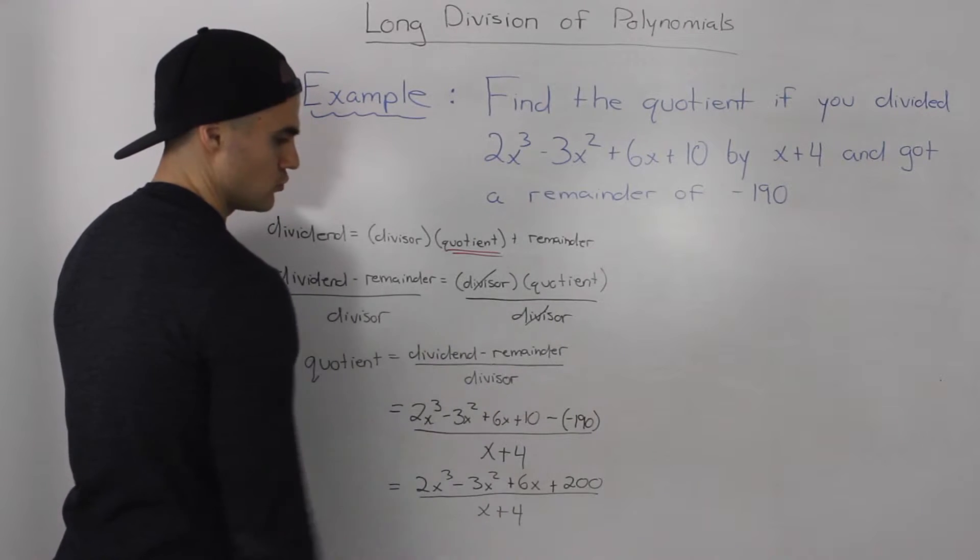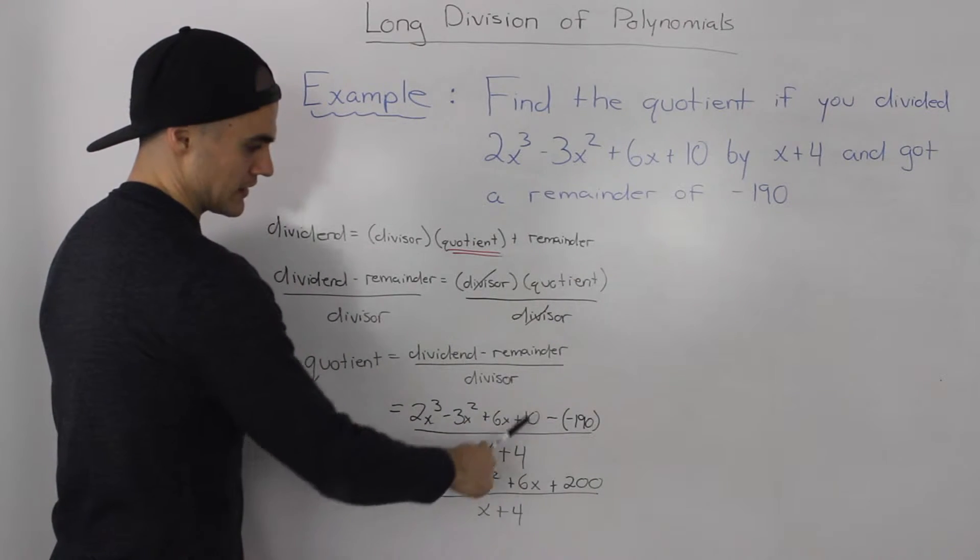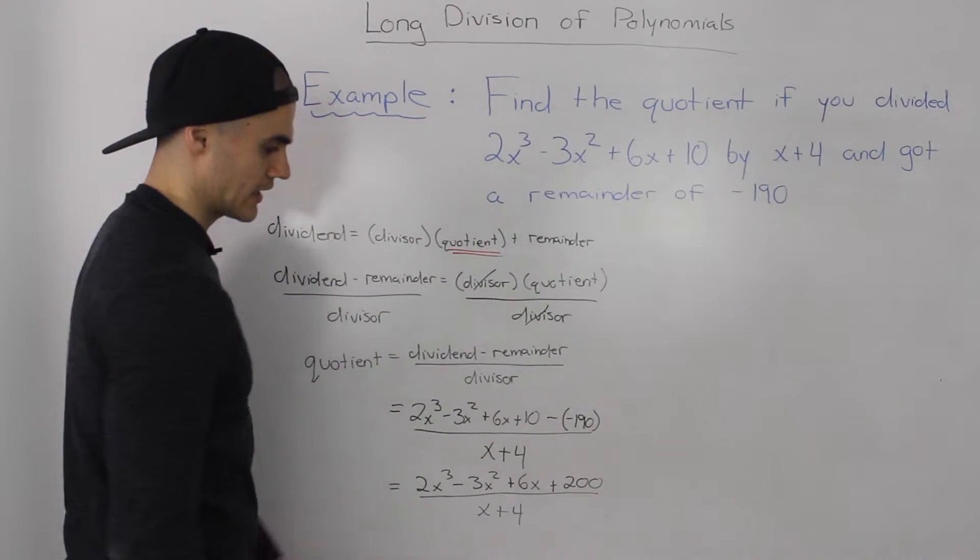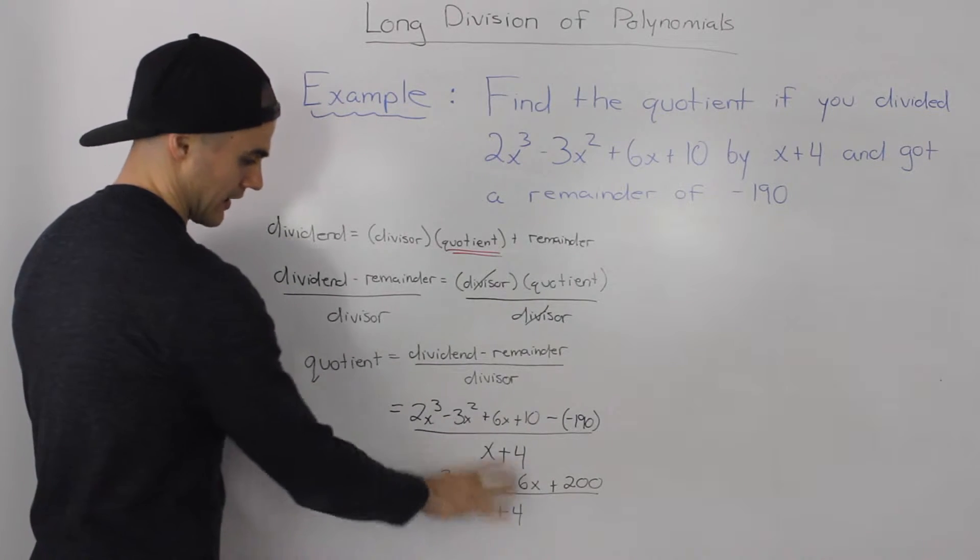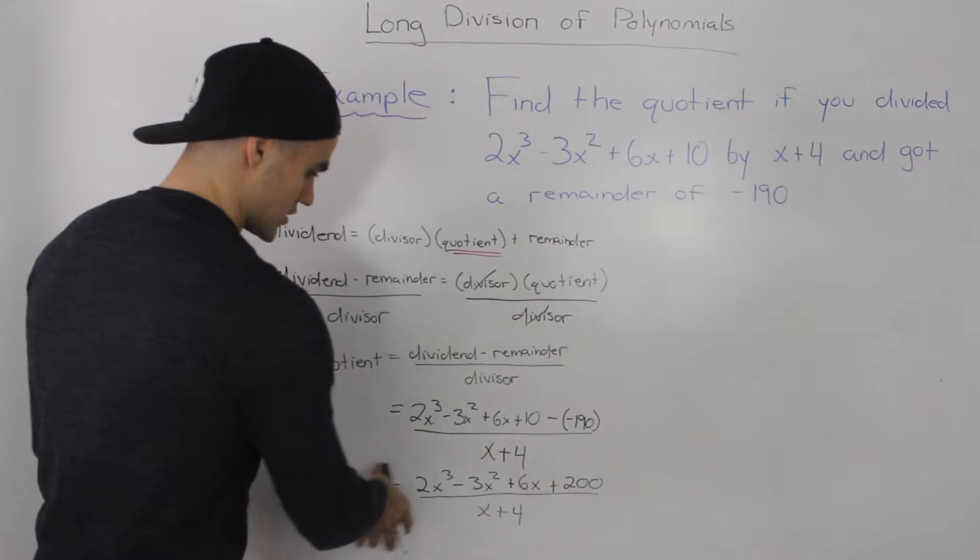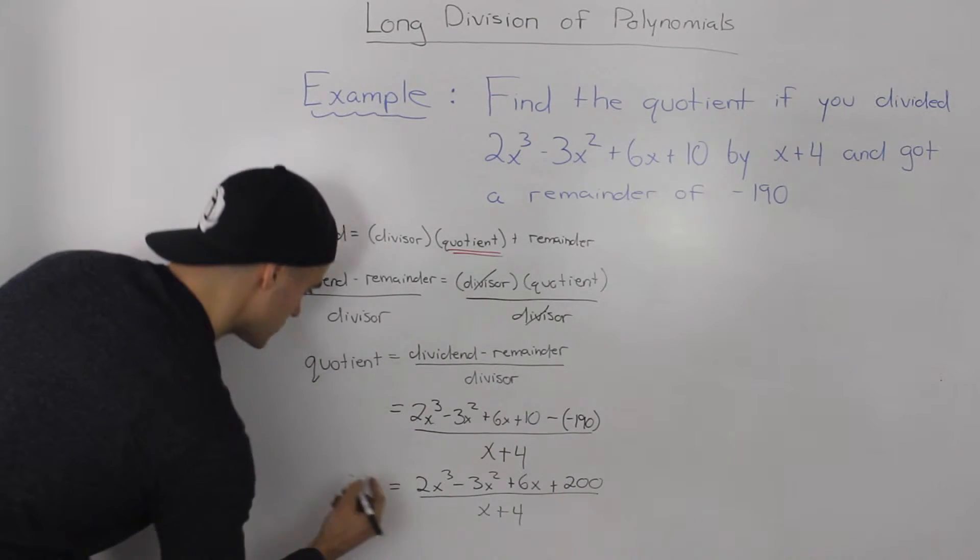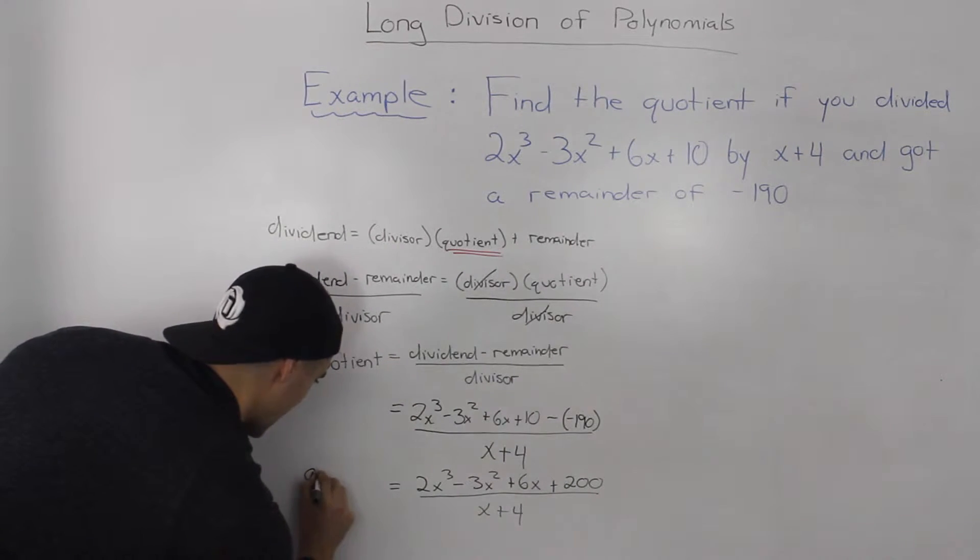Taking the numerator and simplifying it, 10 minus negative 190 is the same as 10 plus 190 and we end up with 200. Everything else stays the same. So this new expression here is our quotient, which is what we are trying to find.